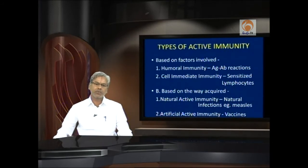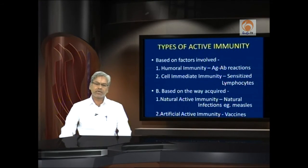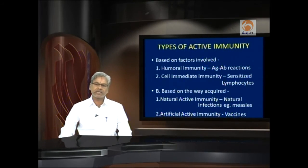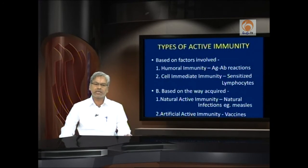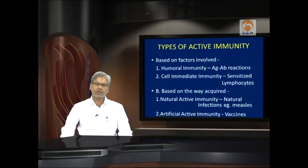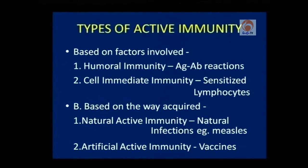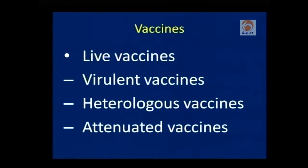Based on the way we acquire immunity, there are two types: natural active immunity and artificial active immunity. For example, if we get a measles infection in our childhood, we suffer for some time and recover, and during the rest of our lifetime we are generally not prone to measles infection a second time — because the immune system keeps information about measles in its memory and fights at once upon secondary infection. Artificial active immunity is developed by vaccines.